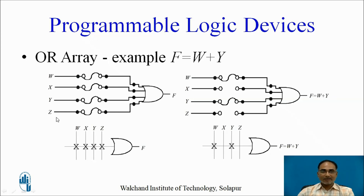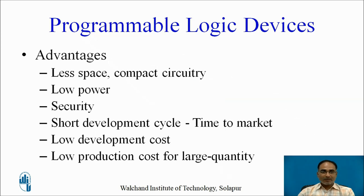The w, x, y, and z individually represent AND terms. Here is one of the symbols used to represent a multi-input OR gate having rows and columns. After programming for the above function, this multi-input OR gate will look as shown. These are a few advantages of using programmable logic devices over fixed logic ICs.